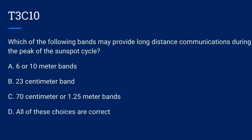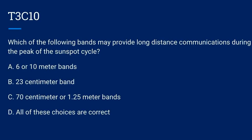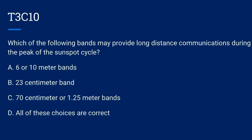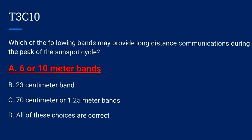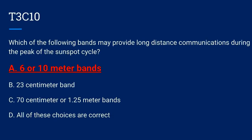T3C10. Which of the following bands may provide long-distance communications during the peak of the sunspot cycle? A. 6 and 10 meter bands. B. 23 centimeter band. C. 70 centimeter and 1.25 meter bands. Or D. All of these choices are correct. The correct answer is A: 6 and 10 meter bands.